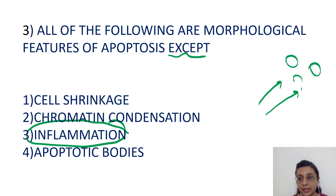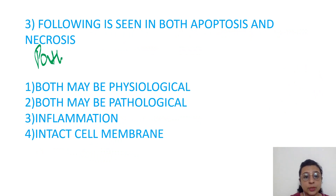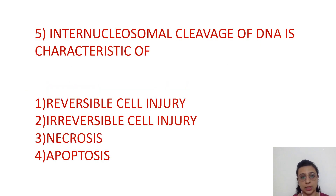These apoptotic bodies are well-planned to be phagocytosed by macrophages before any inflammatory reaction is incited. Necrosis is always pathological, whereas apoptosis can be physiological or pathological — so both may be pathological.